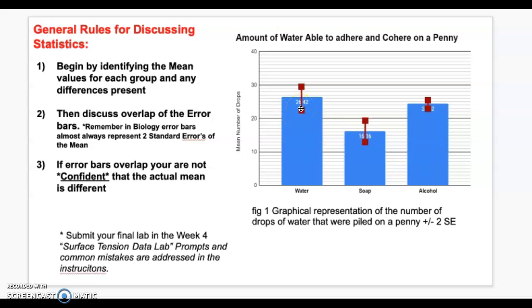So, in biology from now on, whenever we graph something and we get an average, we're also going to graph the standard error of the mean, and then we're going to talk about whether the thing we did, so in this case we added soap, we added alcohol to water, whether the thing we did changed the result or didn't. And the way we'll talk about it is in terms of our confidence that the means are actually different.